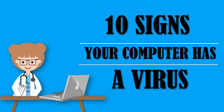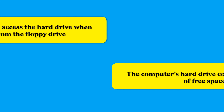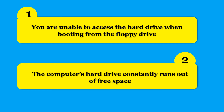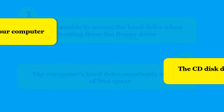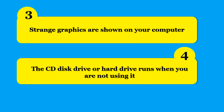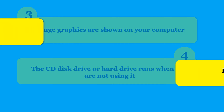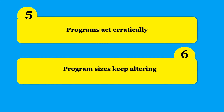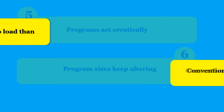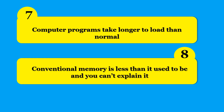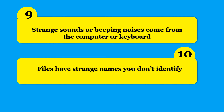10 signs that your computer has a virus: You are unable to access the hard drive when booting from the floppy drive. The computer's hard drive constantly runs out of free space. Strange graphics are shown on your computer. The CD disk drive or hard drive runs when you are not using it. Programs act erratically and program sizes keep altering. Computer programs take longer to load than normal. Conventional memory is less than it used to be. Strange sounds or beeping noises come from the computer or keyboard. Files have strange names you don't recognize.